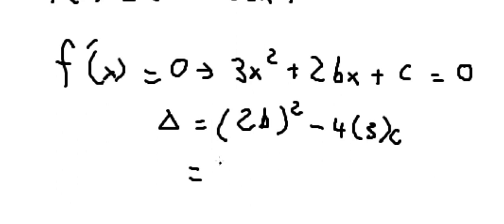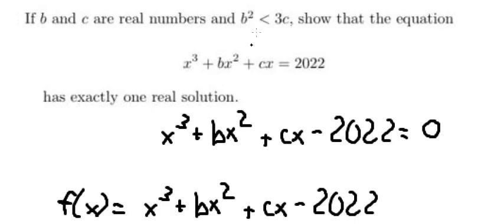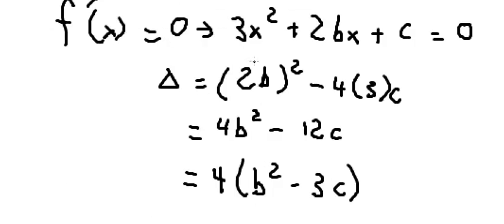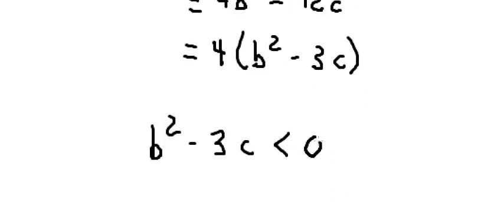So this one equals 4b squared minus 12c. Now we have 4 and 12, we can do factorization. We know that we have the condition b squared is smaller than 3c, that means b squared minus 3c is smaller than zero based on the conditions.